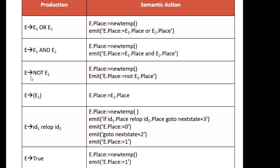If E → NOT E1, we create a temporary variable for E, then emit: E.place = NOT E1.place. That means if E1 is true, E is false; if E1 is false, E is true. Then we have E → E1, meaning E.place = E1.place. Now we will go to the relational operator. The production is E → id1 RELOP id2.